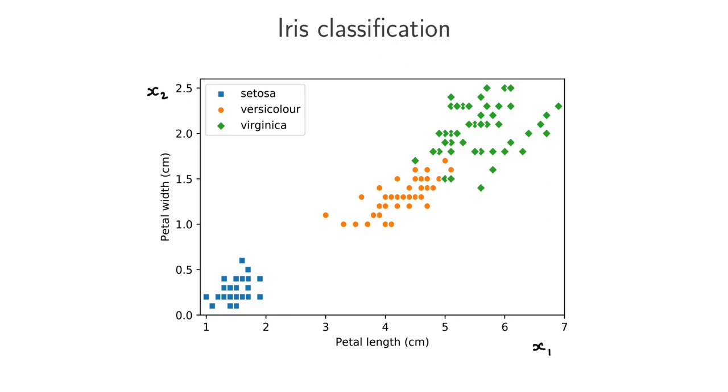And based on these two features, we might want to be able to classify a new iris, a new one that we haven't seen before. And we might want to predict, based on those two measurements, whether it's a Setosa, a Versicolor, or a Virginica.